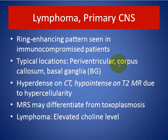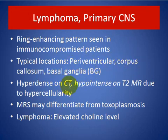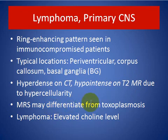Lymphoma with ring enhancement is seen in immunocompromised patients. Typically located periventricularly, at the corpus callosum, and basal ganglia. Hyperdense on CT scan and hyperintense on T2-weighted imaging due to hypercellularity. MRI spectroscopy may differentiate from toxoplasmosis — lymphoma has elevated choline level.